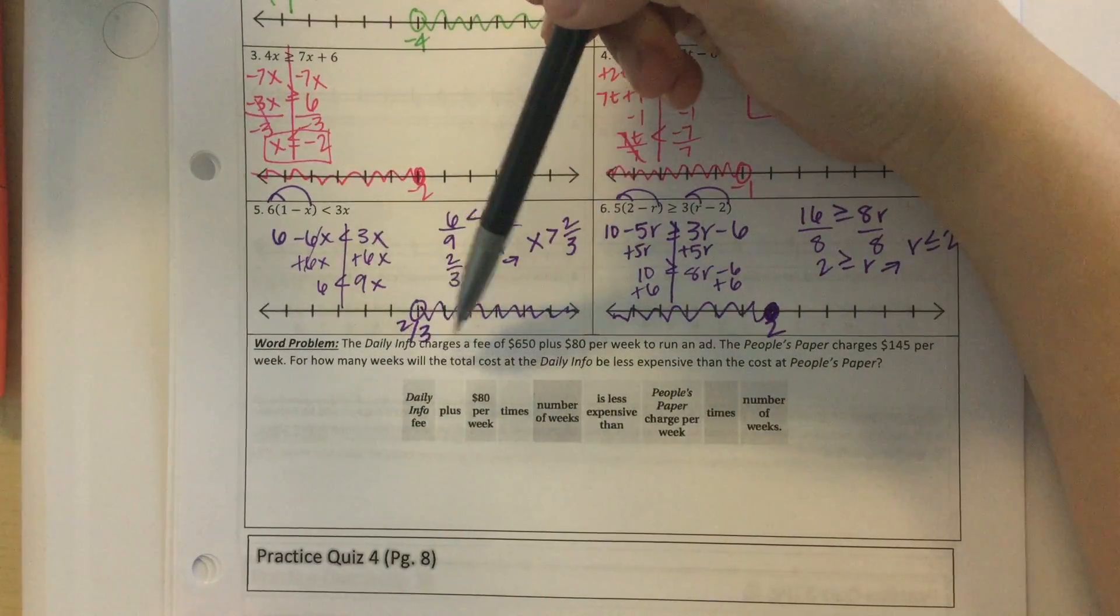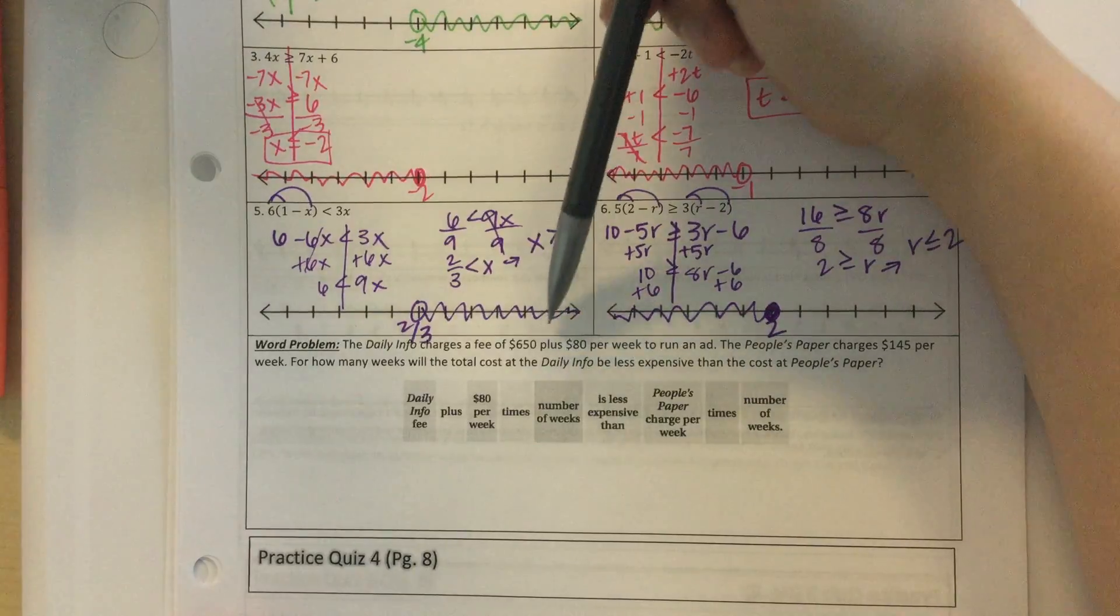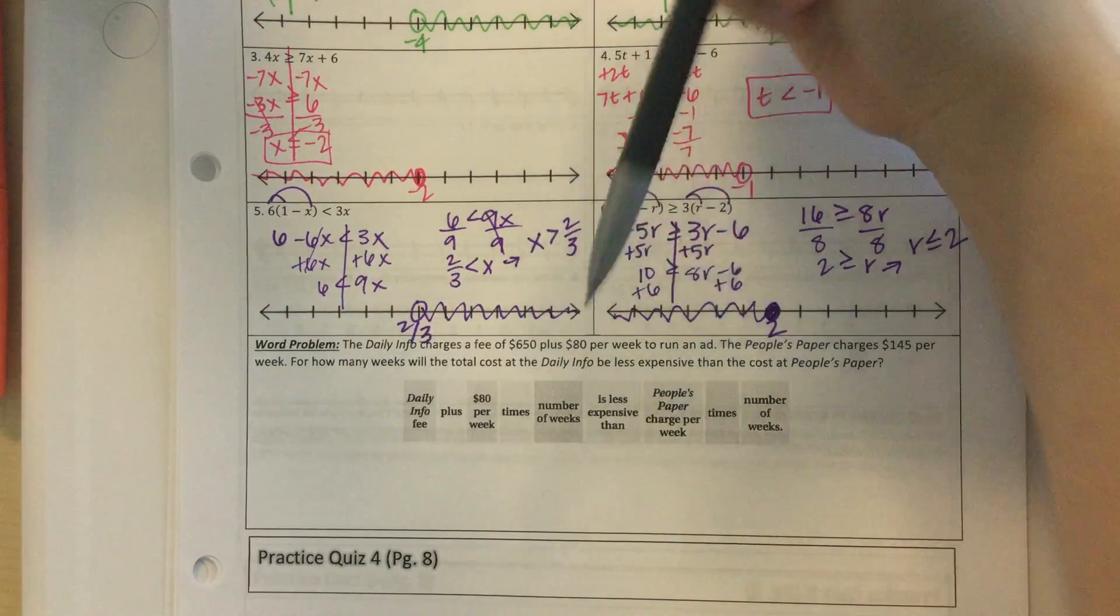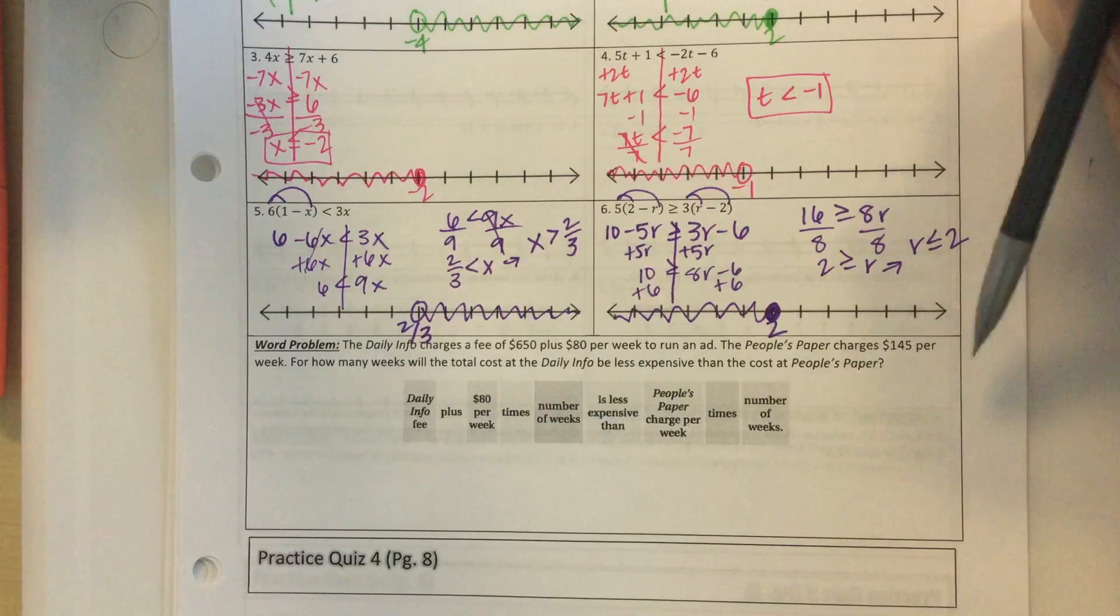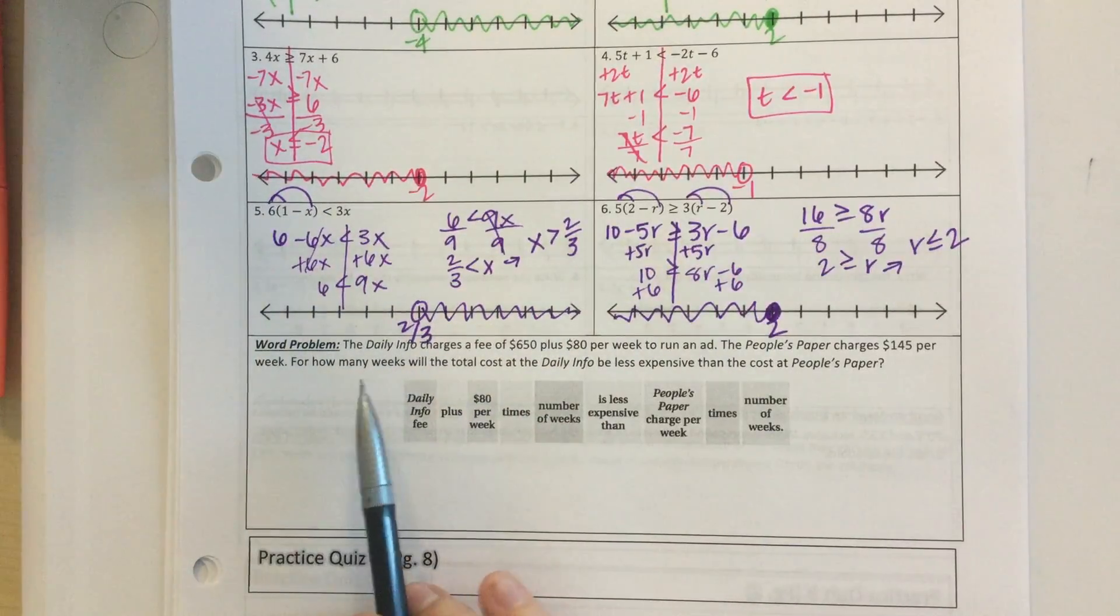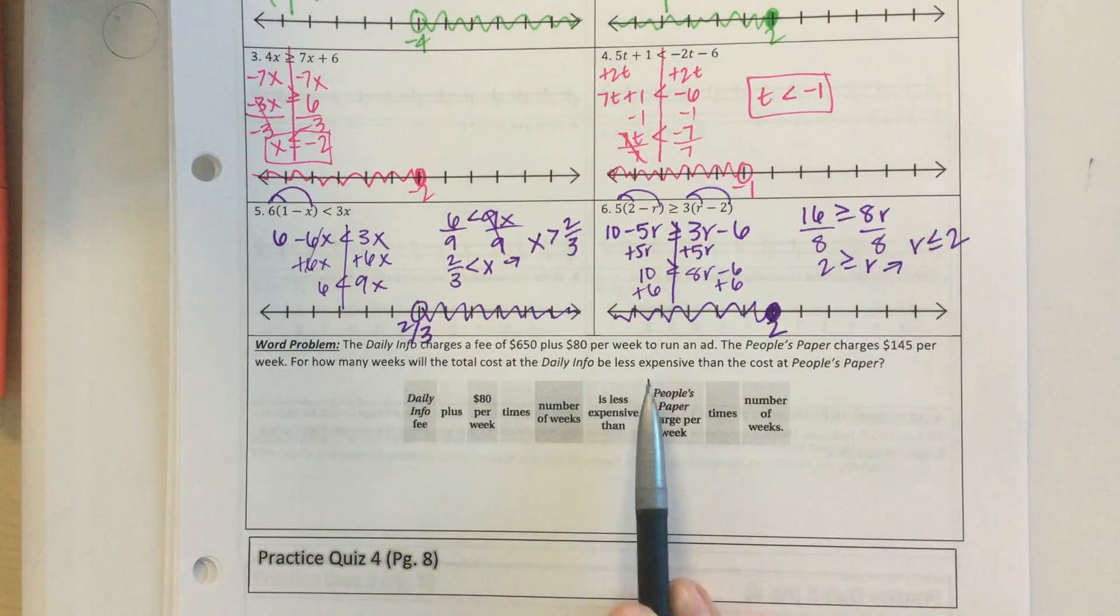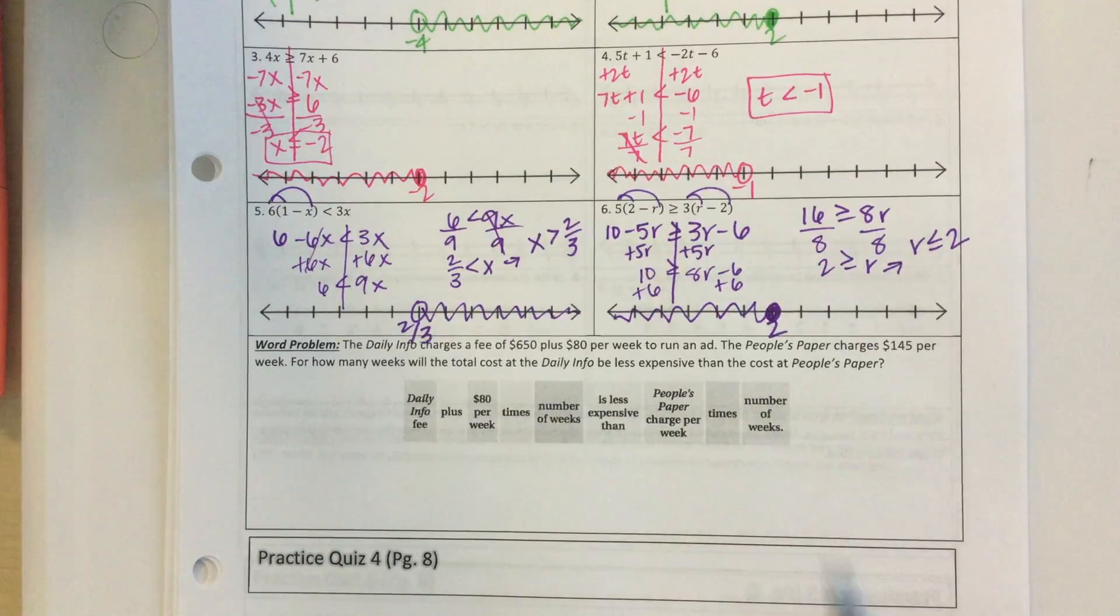The daily info charges a fee of $650 plus $80 per week to run an ad. The people's paper charges $145 per week. For how many weeks will the total cost of the daily info be less expensive than the cost of the people's paper?